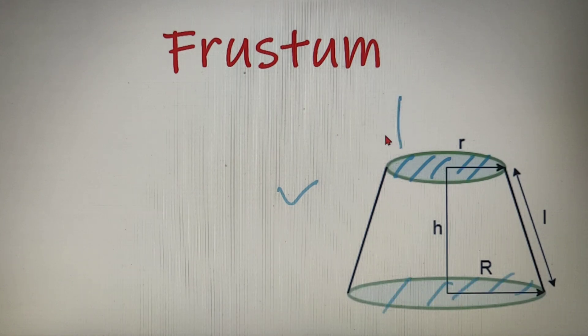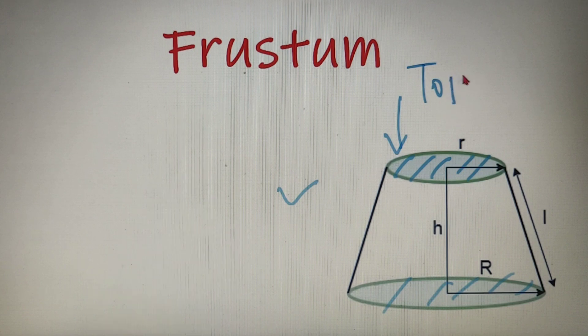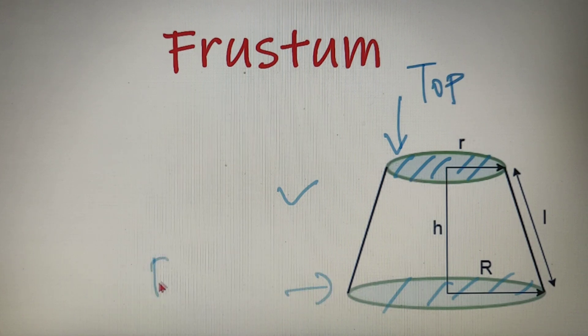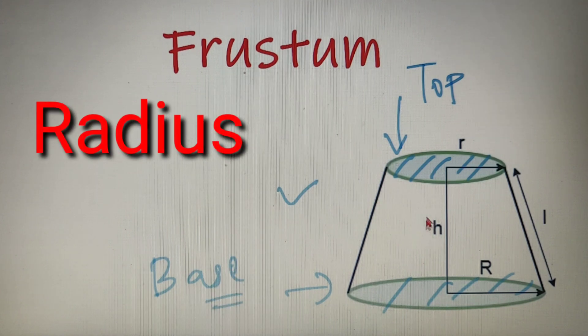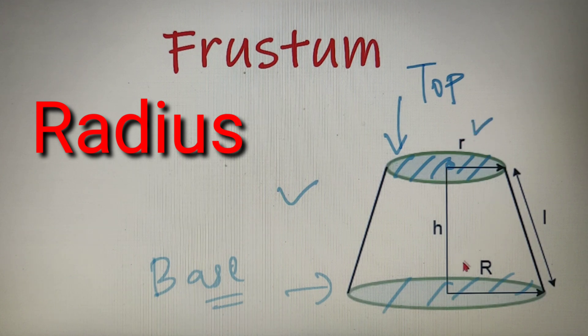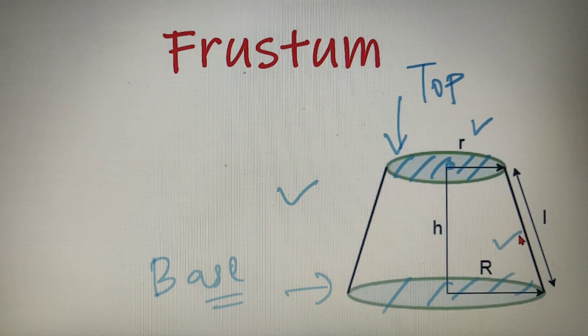Now over here you can clearly see that the top part is a smaller circular portion and it has a smaller area and the bottom part or the base part is a larger circular portion and has larger area. Now you can also see that the radius of the smaller circular area or the top part is taken as small r and the radius of the base or the bottom area is taken as capital R.